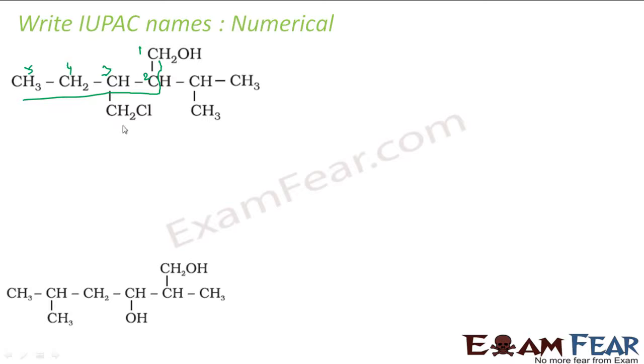I have a CH2Cl group which is chloromethyl, and I have a propyl group here. Alphabetically, C comes first, so I'll write 3-chloromethyl at the third position.